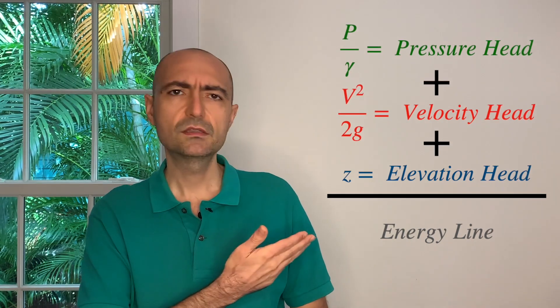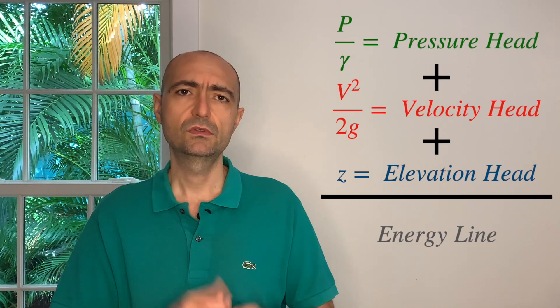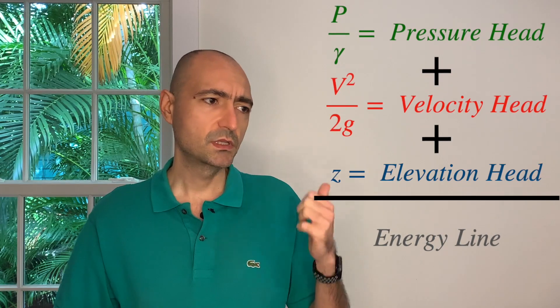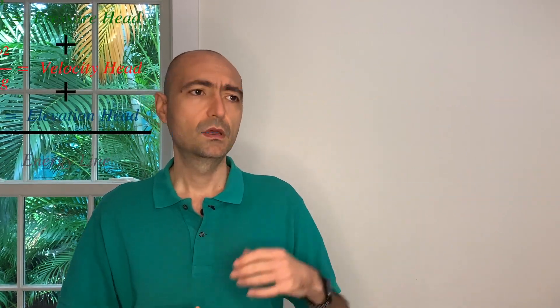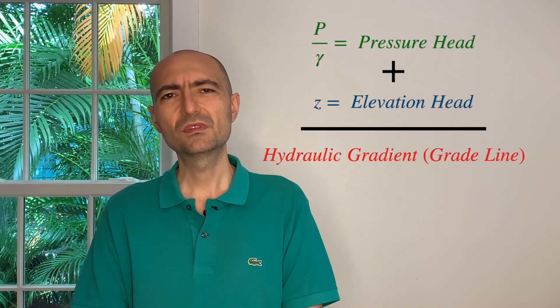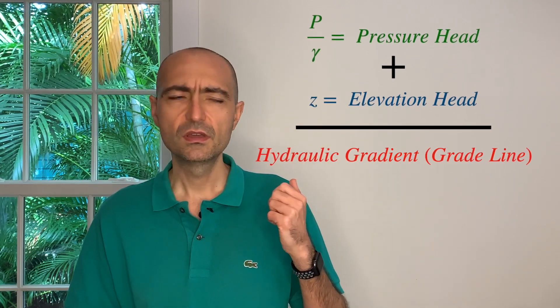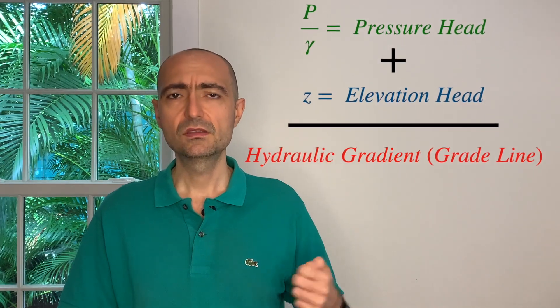This will come in handy because there are two concepts they may test you on: one is the hydraulic line, the other is the energy line. The energy line is basically the summation of these three terms: pressure head plus velocity head plus elevation head. That will be a constant value if there's no loss. The hydraulic grade line is the summation of the elevation head and the pressure head, so you're missing the velocity head.